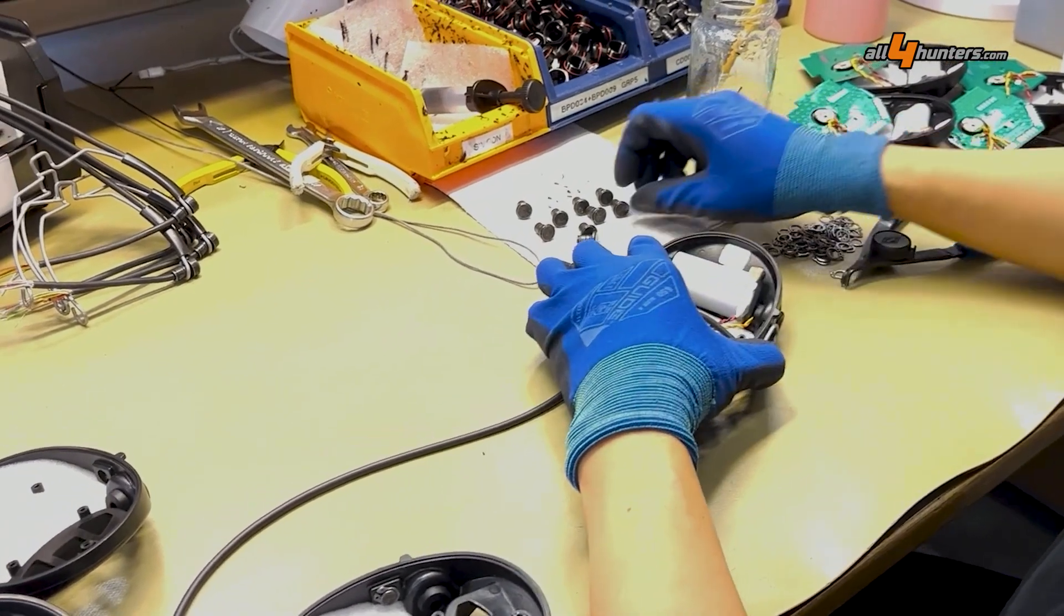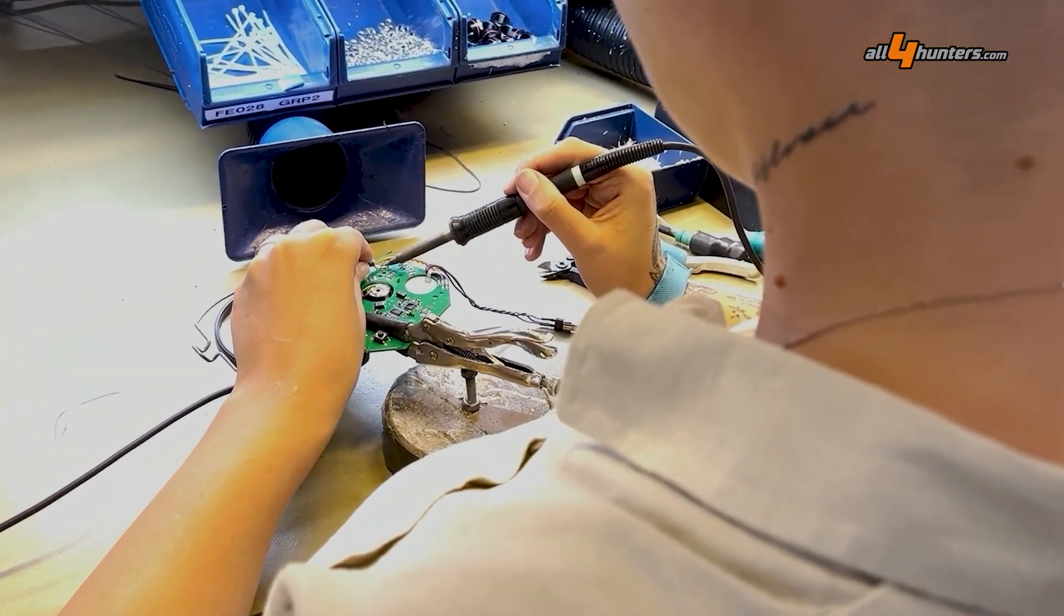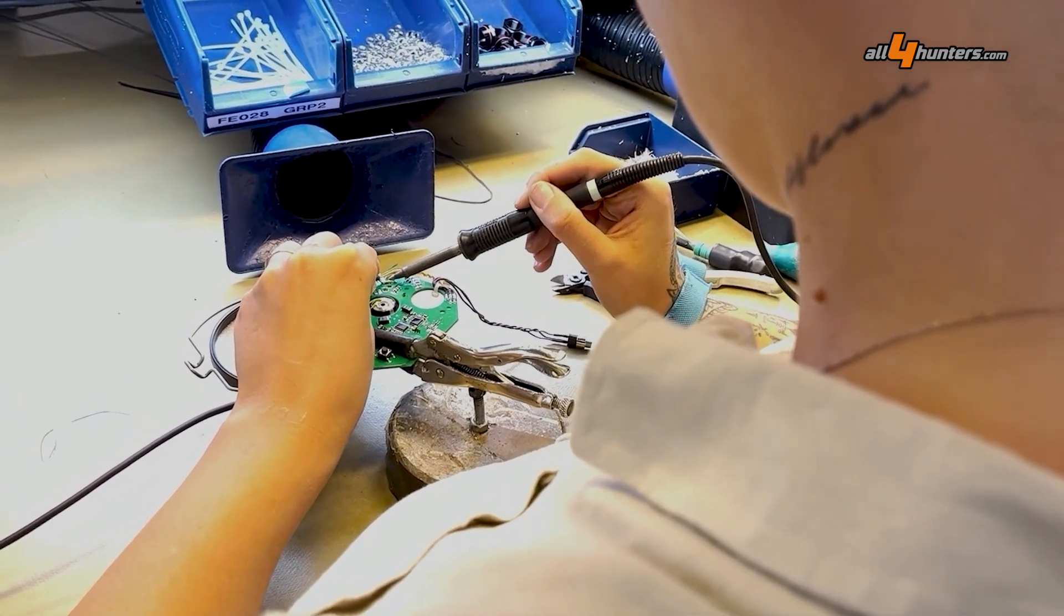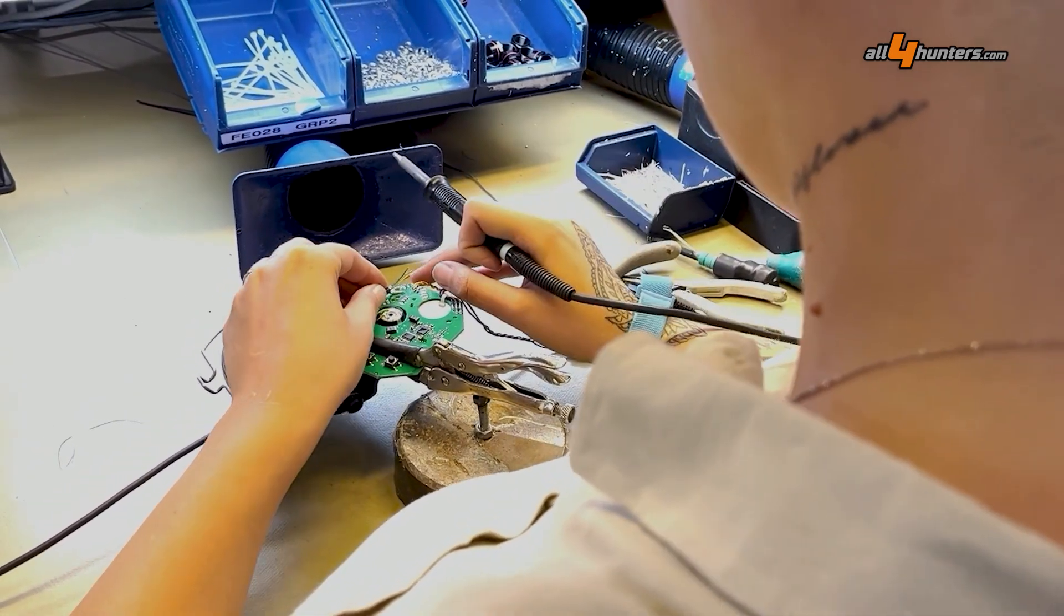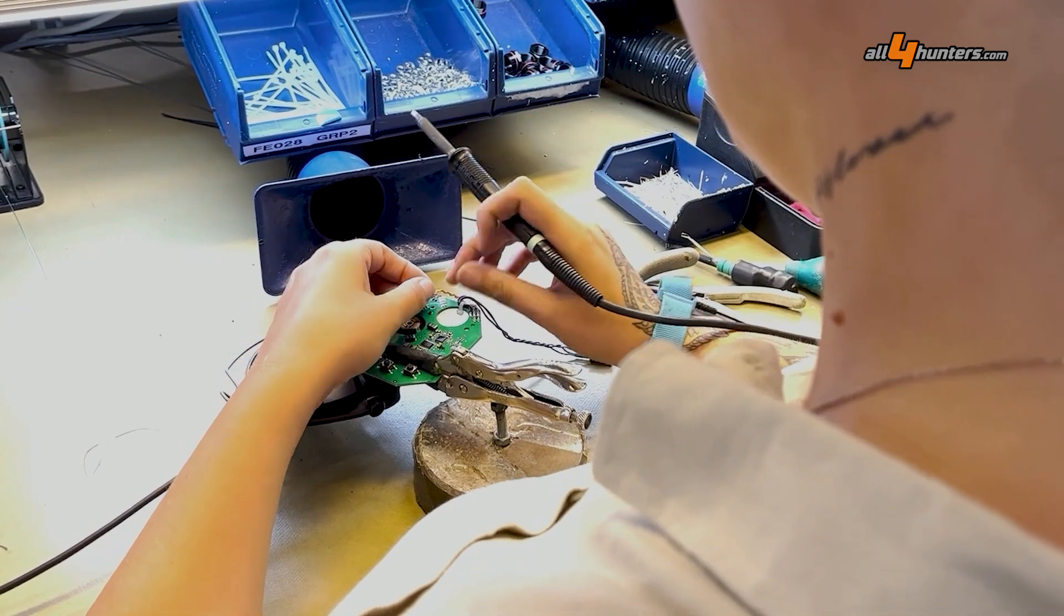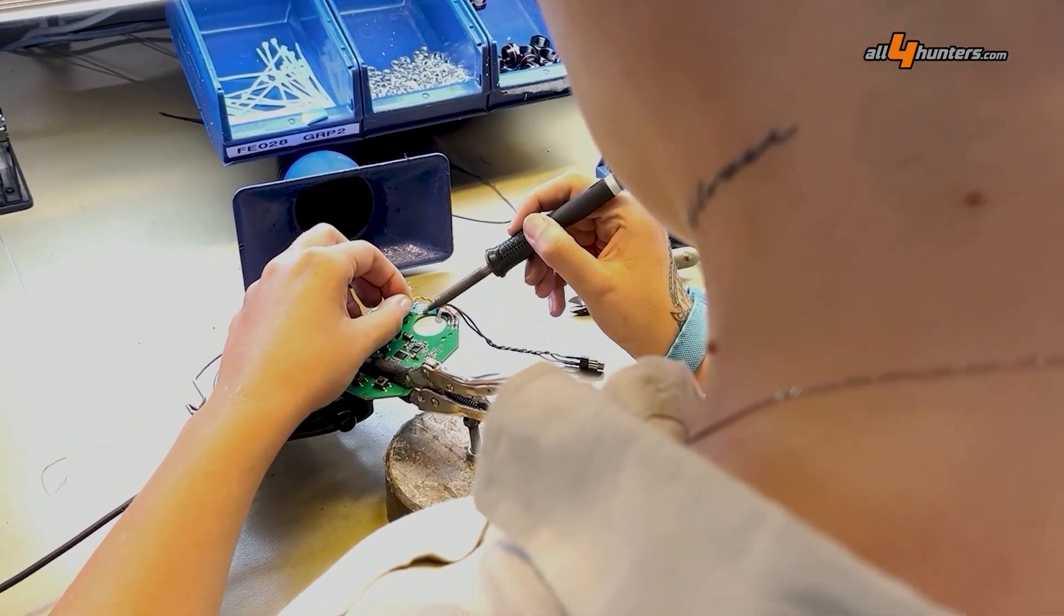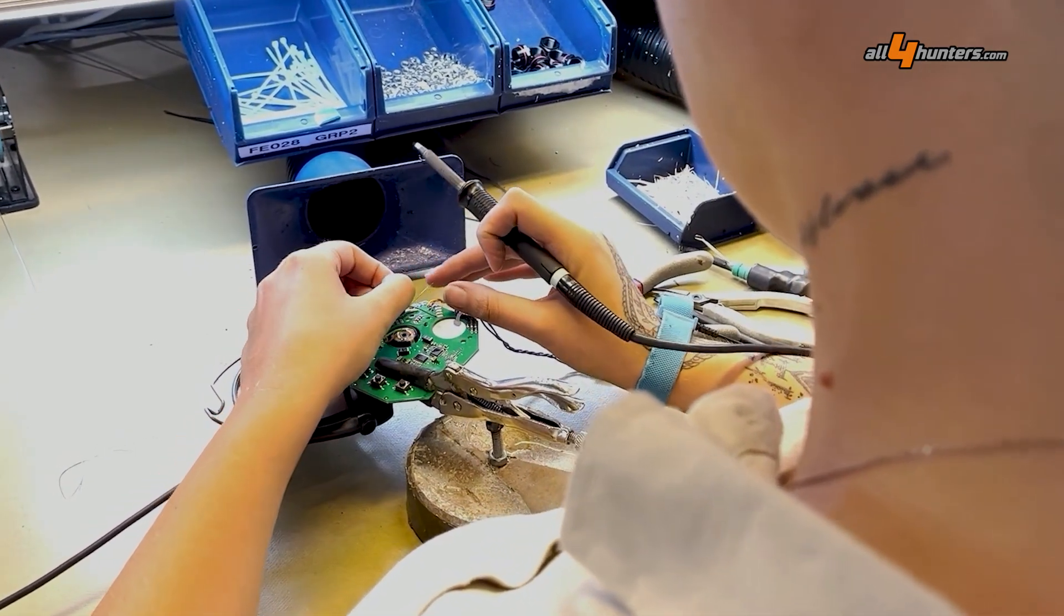This part is now ready for the next work step. One of the workers solders the cables to the prepared pads on the board. She has to remember many colors and must not mix up any of them. For very fine cables and in difficult places, she uses needle nose pliers.